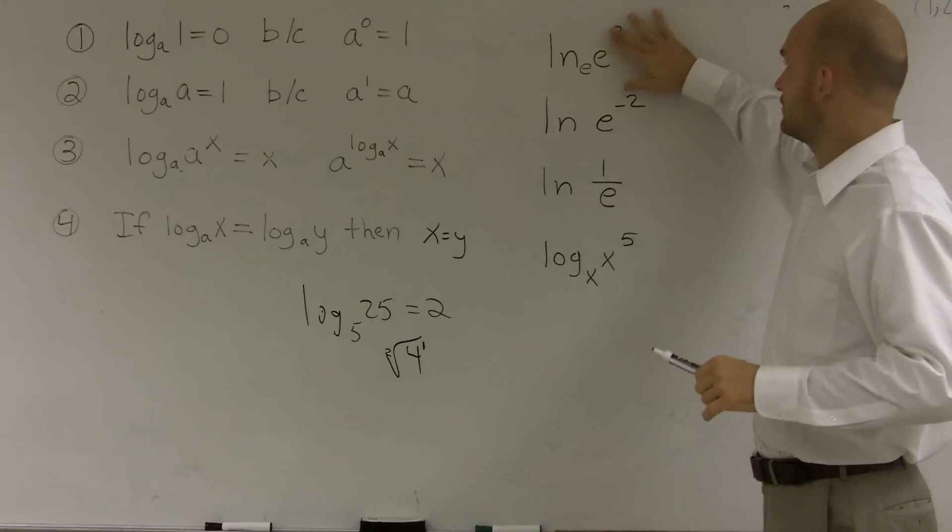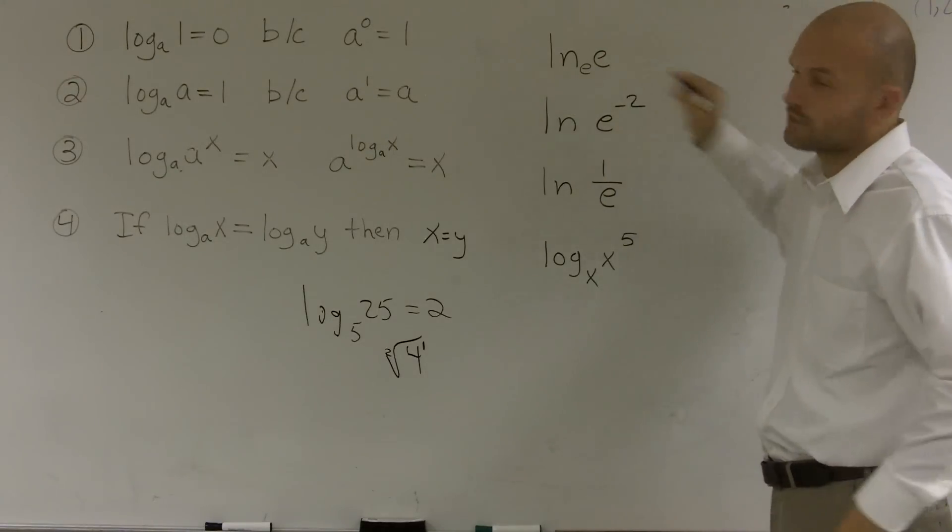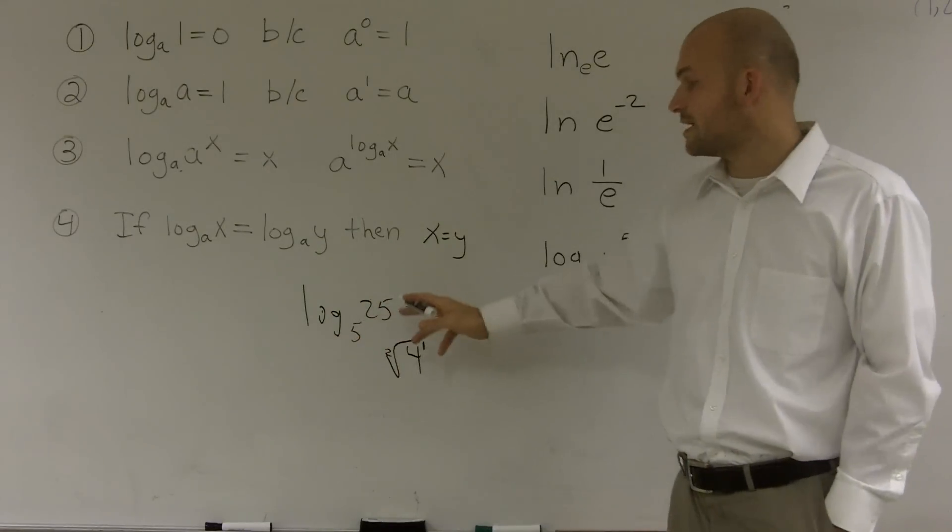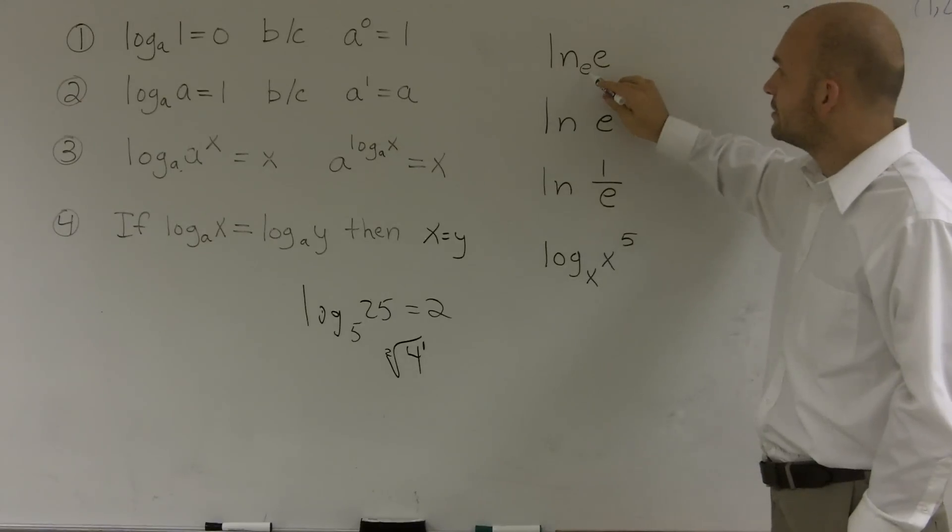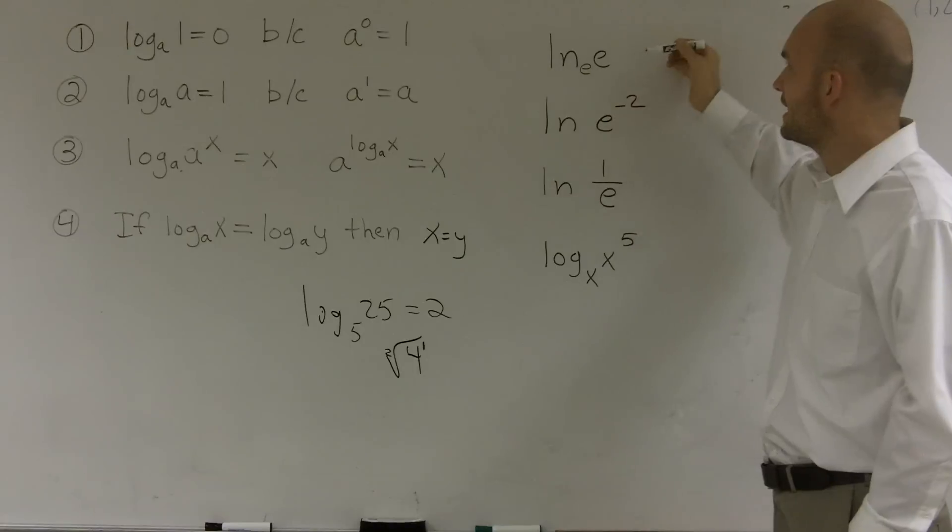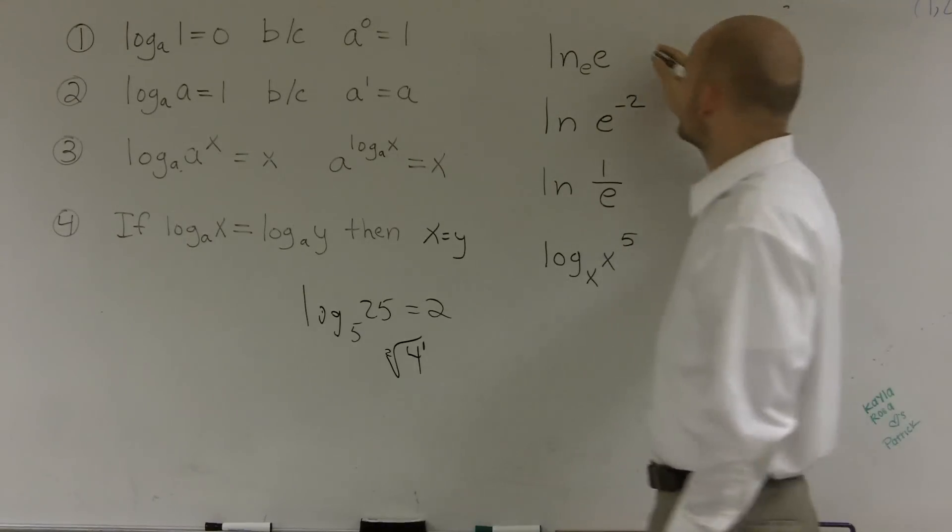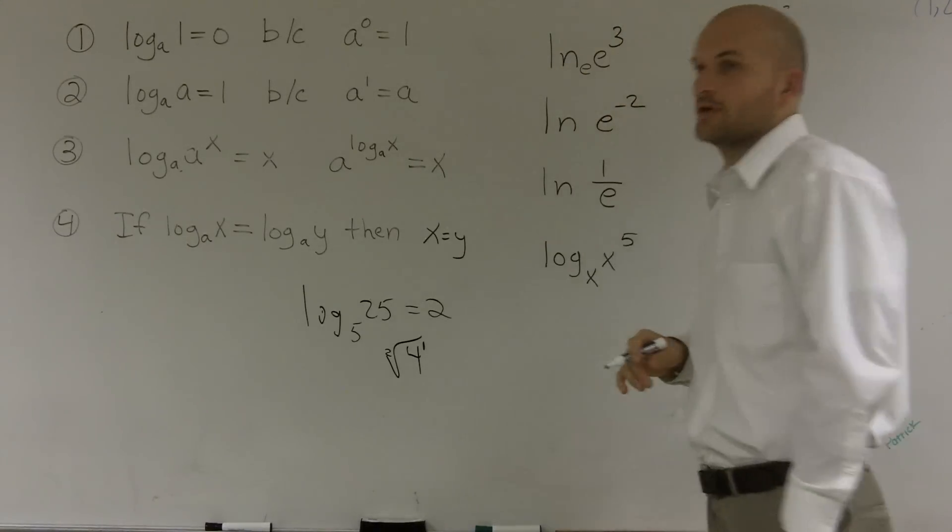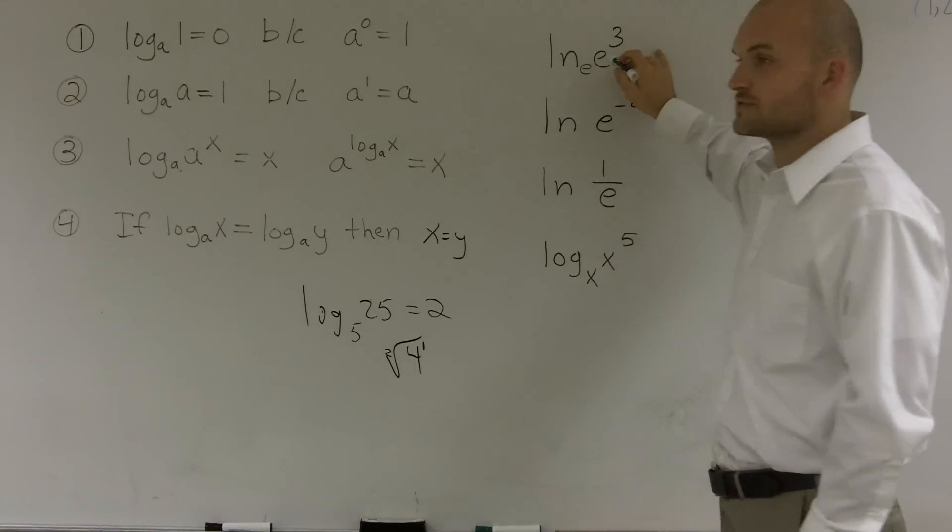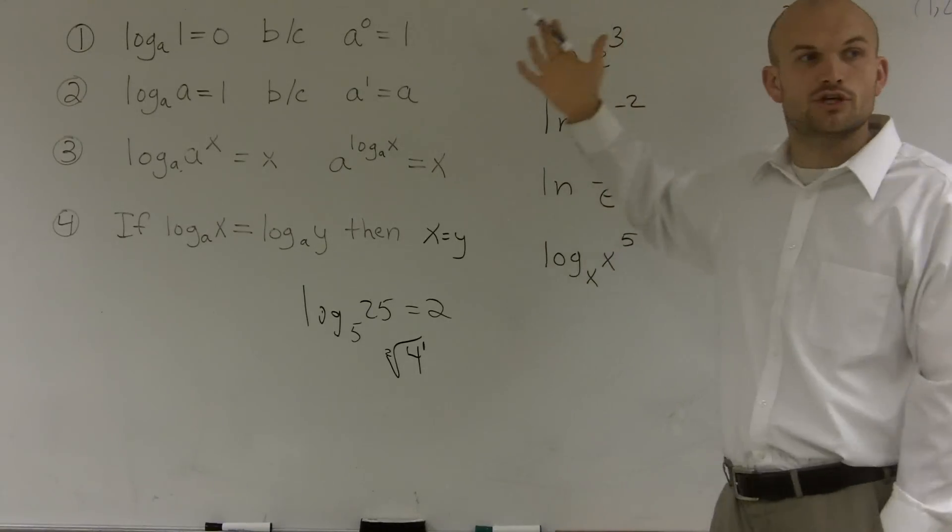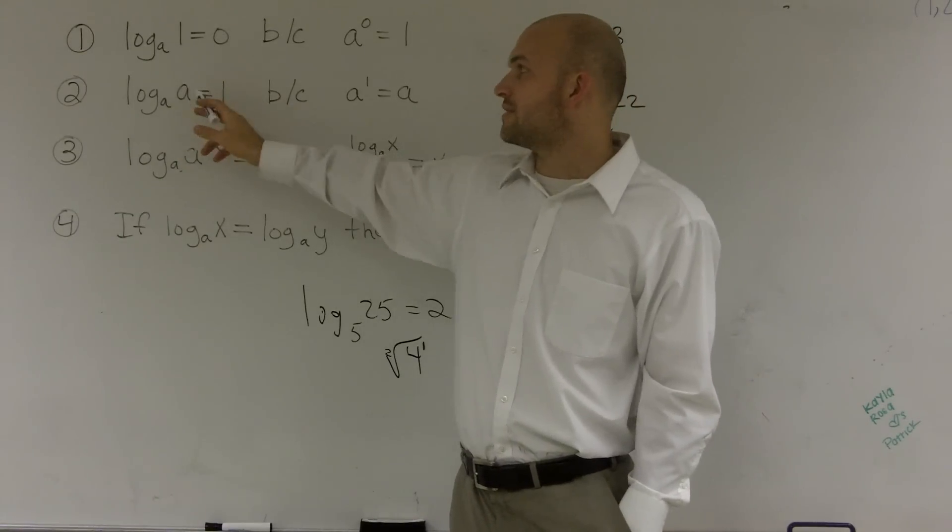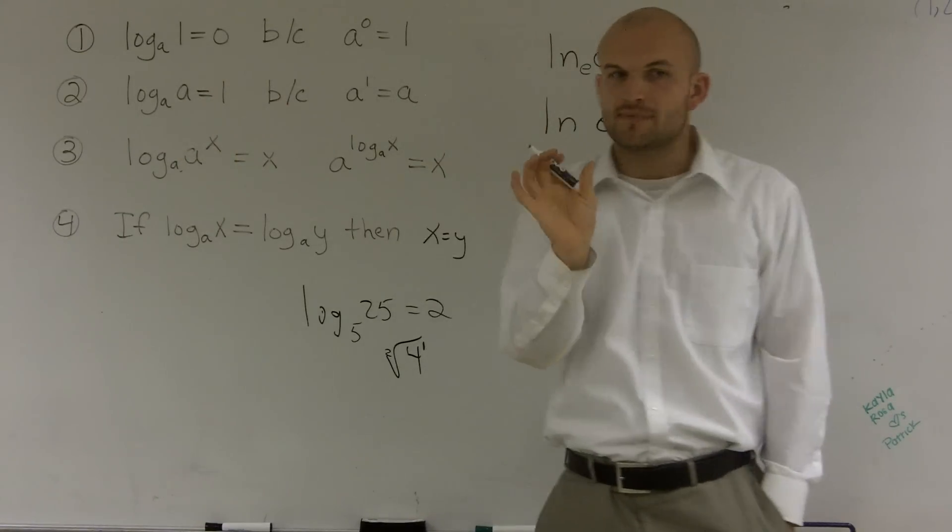Let's forget about this 3 for a second. Log base 5 of 25 means 5 raised to what number gives you 25? So if I say e raised to what number gives you e, the answer is 1. What happens if I put a 3 as an exponent? A common misconception is students would say this answer is still 1 because 1 cubed is 1. Be careful - if we say a to the base a raised to a equals 1, there's something about logarithms though.